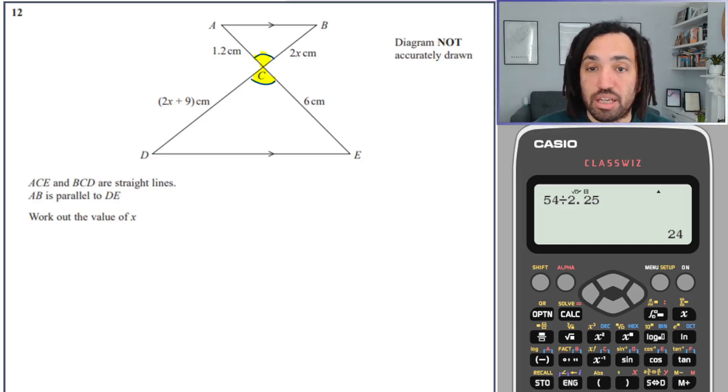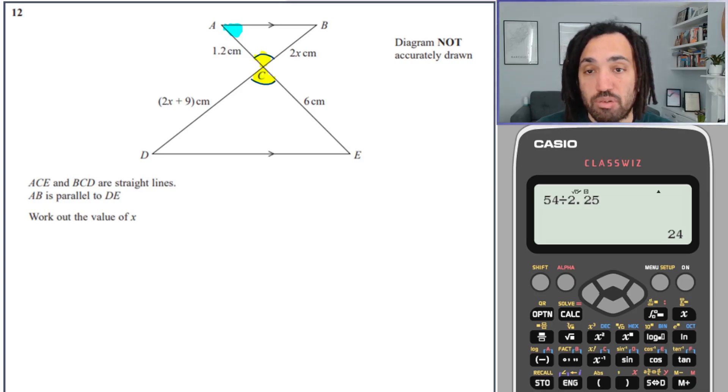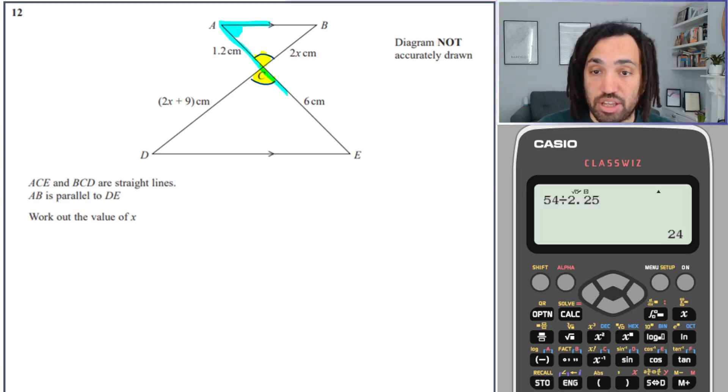So when we've got this cross or this X shape created by two lines, the two opposite angles will be the same. Now let me highlight this angle up here, this blue angle. Now which angle is the same as that blue angle? Well we've got parallel lines running at the top and the bottom, so we can create this Z.